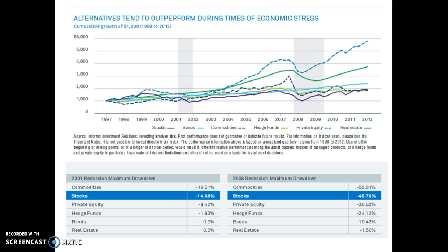Looking at alternative asset classes such as hedge funds and real estate, in the 2001 crisis hedge funds were barely affected at all and real estate was not affected. During 2008, the impact of the global financial crisis on hedge funds was only half that of stocks, whereas real estate only had a very small decline. Because alternative assets may be defensive in the sense that they hedge against big economic contractions, this can provide a boon to investors and is another reason why alternative investments should be considered as part of the asset allocation mix.